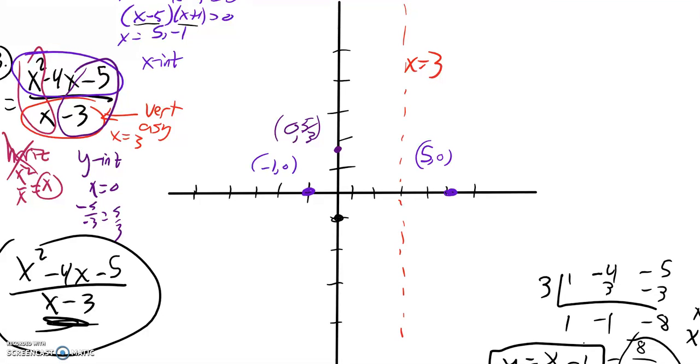So that would have a y-intercept of negative 1, a slope of 1. So over 1, up 1, over 1, up 1, up 1, up 1. So that line right there is my slant asymptote, and I've labeled it.